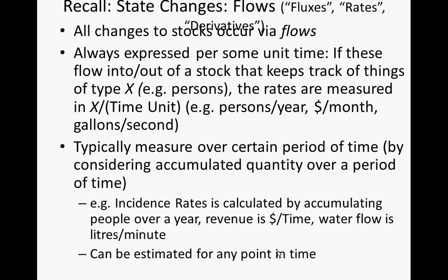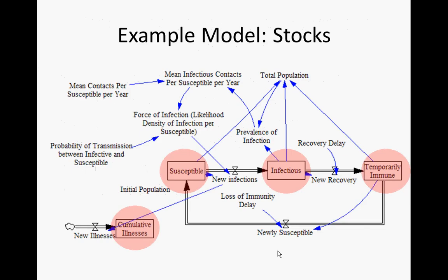For example, if we have a stock of the entire population, what sort of flows might flow into it? Births would be one. Immigration would be another. So here we can have different processes contributing different flows. From a classic mathematical standpoint, those would all be different contributions to the derivative of the total population — the rate of change. But within a system dynamics model, we break those out into pieces, representing them as different flows, because they may have different formulae and because we wish to think about them separately.